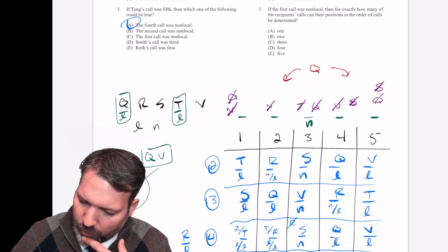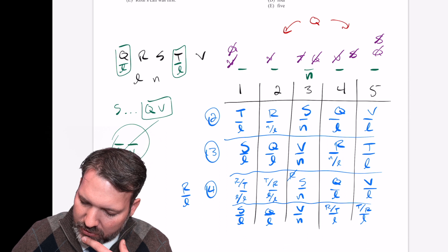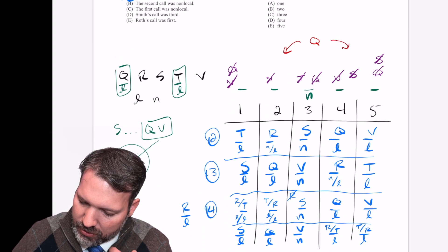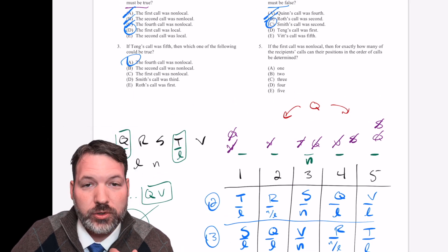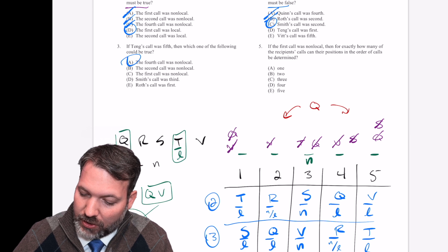All right. Must be false. Quinn's call was fourth. No, that's a possibility. Cross off A. Roth's call was second. No, that's a possibility. Cross off B. Smith's call was second. That is never possible. Circle answer choice C. Smith was either first or third, but could not go second in that particular scenario.